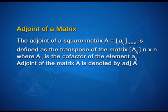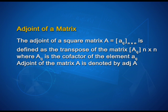What do you mean by adjoint of a matrix? The adjoint of a square matrix A of order n by n is defined as the transpose of the matrix of cofactors A_ij of order n by n, where A_ij is the cofactor of element a_ij. Adjoint of matrix A is denoted by Adj A.